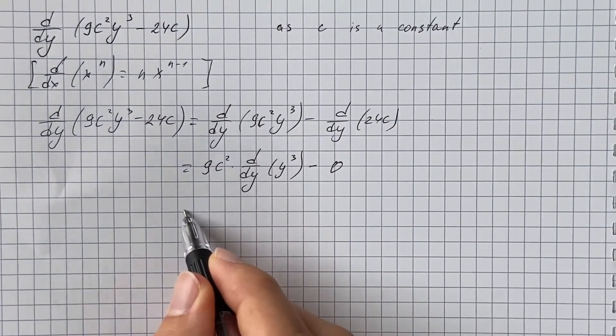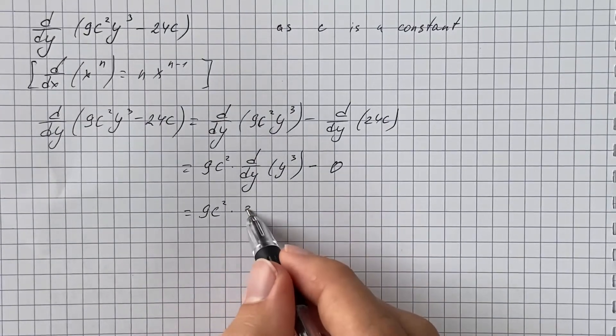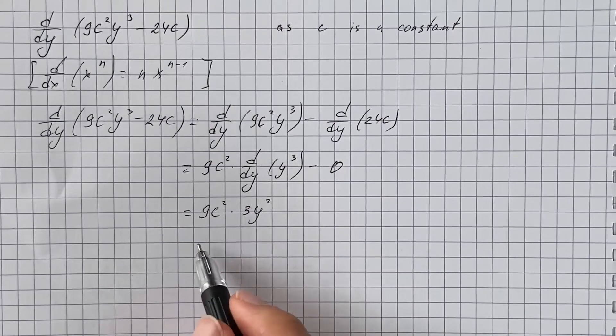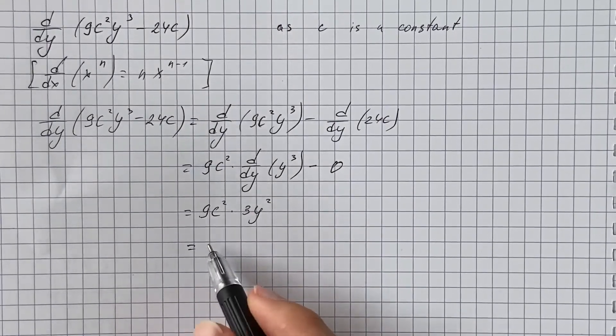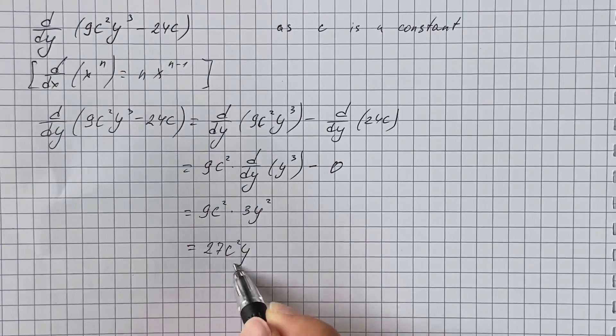So now we get 9c squared times derivative of y cubed is 3y squared and therefore we get 27c squared y squared.